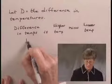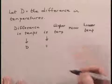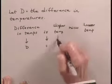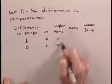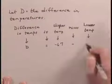Now the difference in temperatures is what we've called D. Is translates to equals. Remember that the higher temperature was negative 67 degrees Fahrenheit minus the lower temperature, which was negative 81 degrees Fahrenheit.